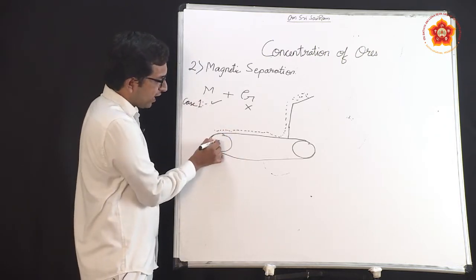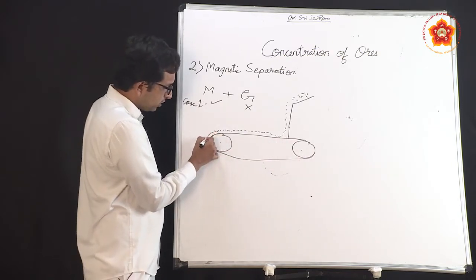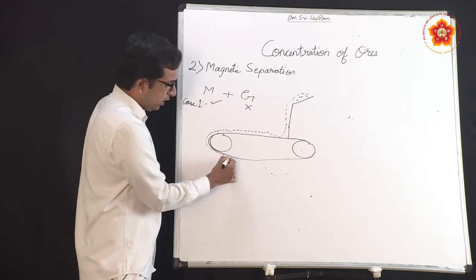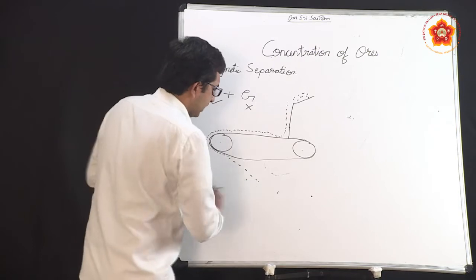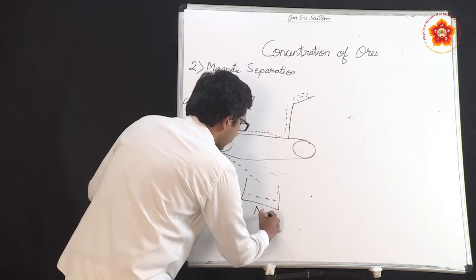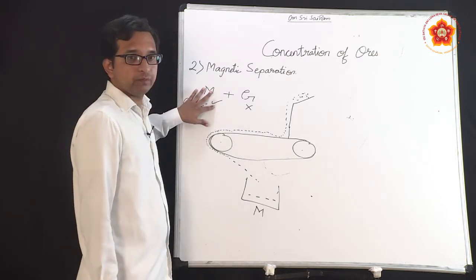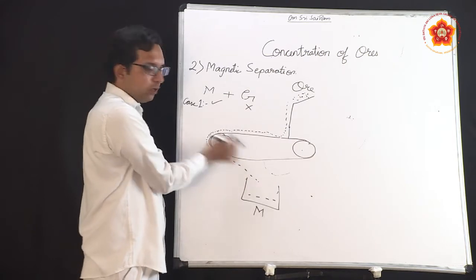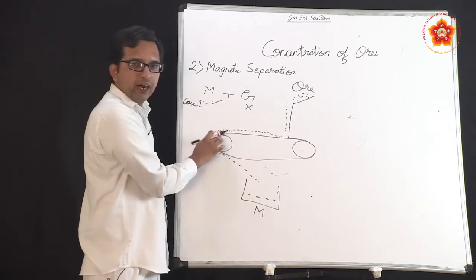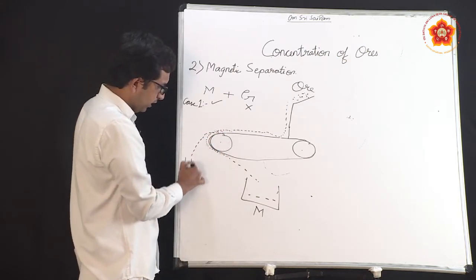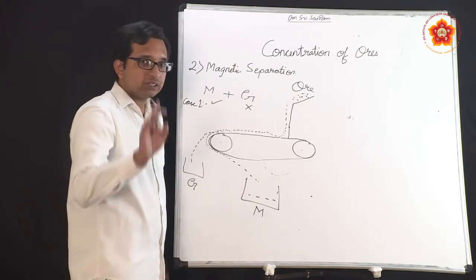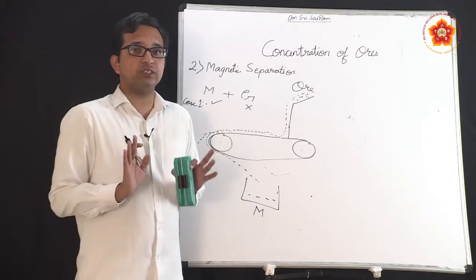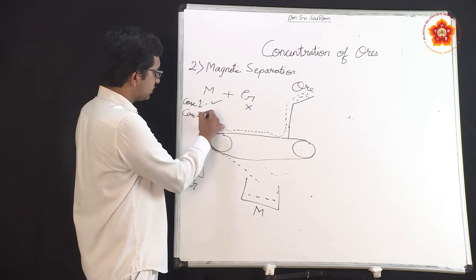When the ore comes near the magnetized wheel, the magnetic metal particles are attracted, travel around the wheel, and are collected on one side. The non-magnetic gangue particles are not attracted by the magnet and fall off on the other side, where they can be collected separately.